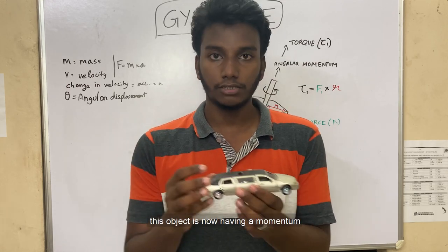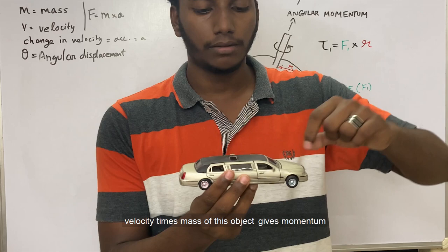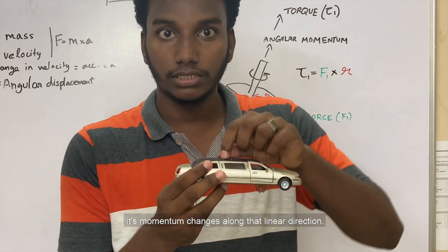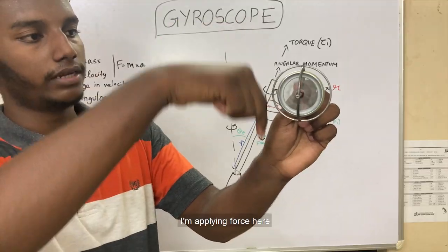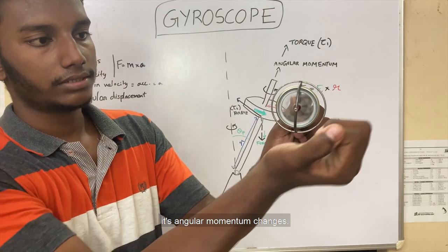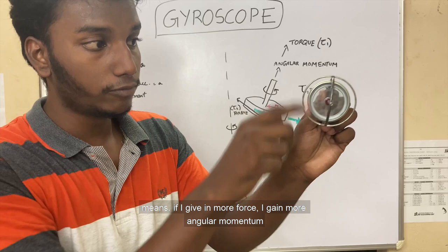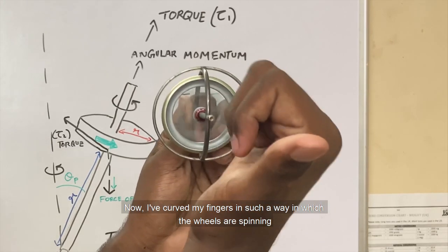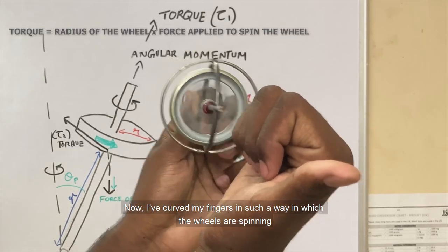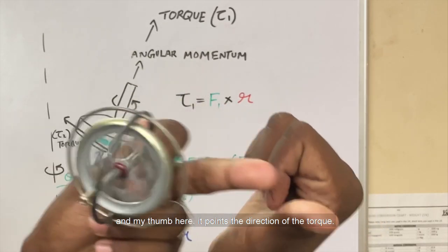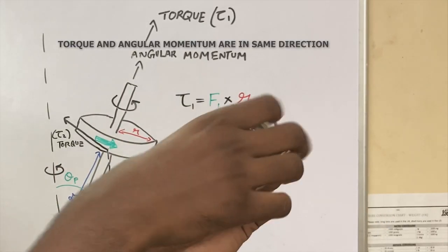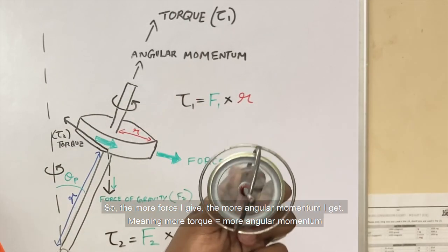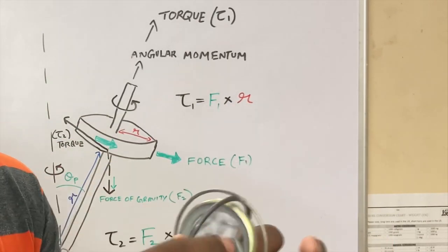This object is now having momentum — velocity times the mass of the object gives you momentum. When I apply force to an object in linear motion, its momentum changes along that linear direction. But when I do the same thing to a wheel, applying force changes its angular momentum. More force means more angular momentum. To understand this, we use the right-hand thumb rule: curve your fingers in the direction the wheel is spinning and your thumb points in the direction of the torque. More torque means more angular momentum.